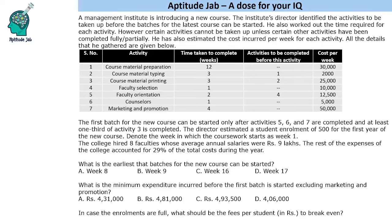Hello everyone, welcome to AptitudeJab. This set says that a management institute is introducing a new course. The director identified the activities to be taken up before the batches for the latest course can be started. He also worked out the time required for each activity. We are given the time required, and there are certain activities that cannot be taken up unless certain other activities have been completed fully or partially. There is also an estimate of the cost incurred per week for each activity. These details are given in the table.